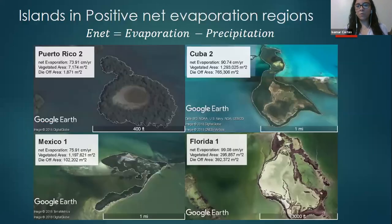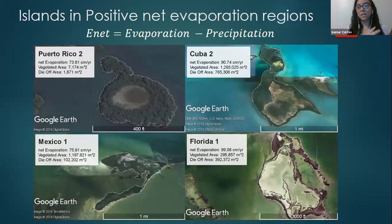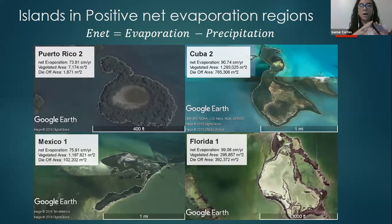So why are we exploring mangrove island systems? Since we're looking to quantify the role of net evaporation rates and climate conditions specifically, we have to use areas that are isolated from any anthropogenic influence that also may cause mangrove degradation, which is why we use mangrove island systems. All of these islands are in very remote regions across the Caribbean.